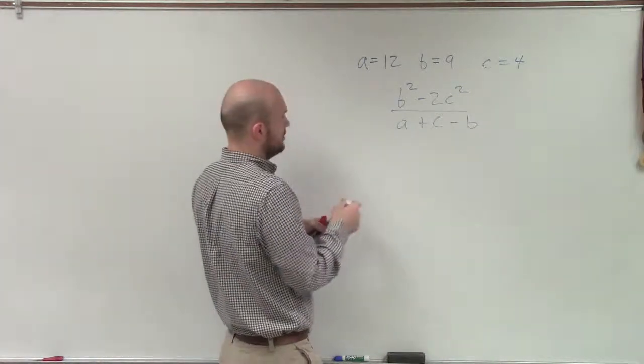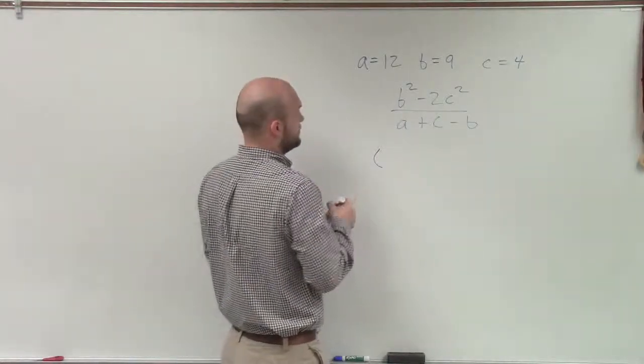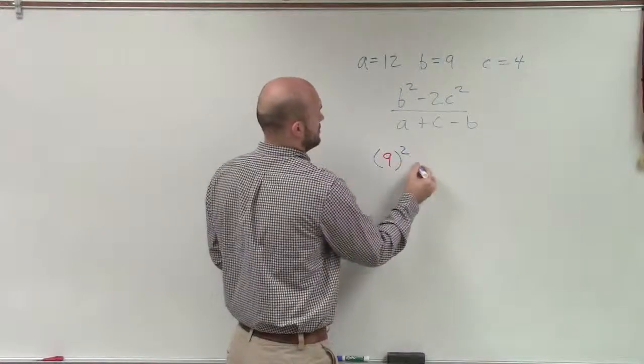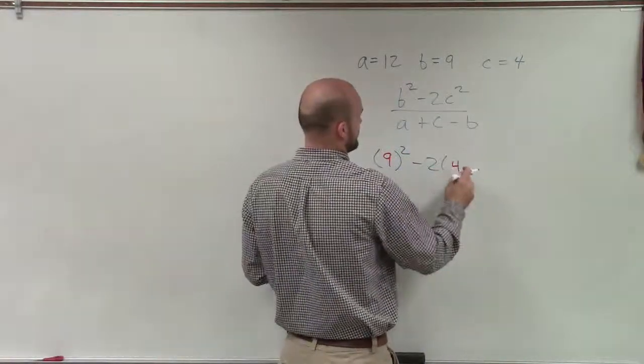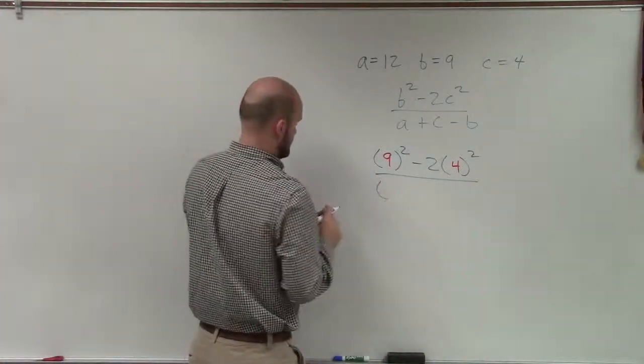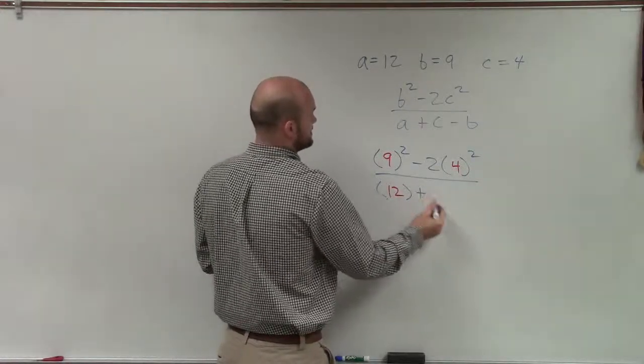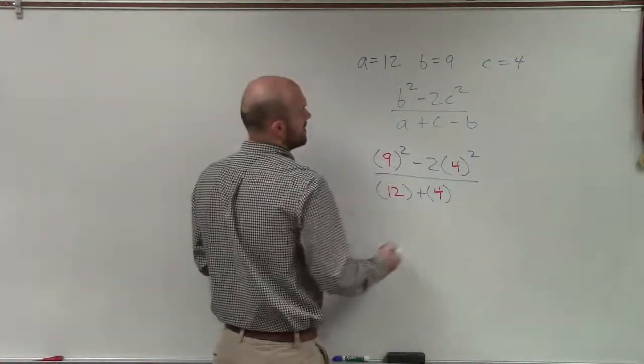So therefore, what I like to do is make sure I put them in parentheses. So I have B equals 9, so that would be 9 squared, minus 2 times C, which was 4 squared, divided by A, which is 12, plus C, which is 4, and then minus B.